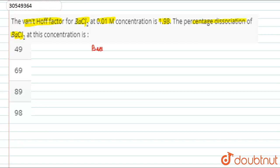For BaCl2, Van't Hoff factor, that is i, is equal to 1.98. And its concentration is equal to 0.01 molar. What will the percentage dissociation be?